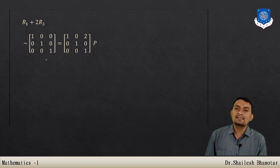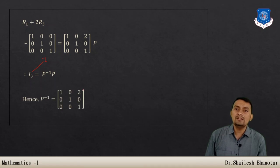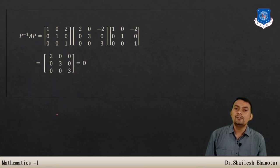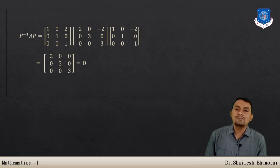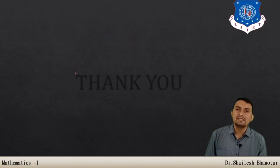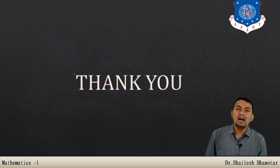After row operations, P inverse is found to be [[1,0,2],[0,1,0],[0,0,1]]. Computing P inverse AP and simplifying gives a diagonal matrix with entries 2, 3, 3 — exactly the eigenvalues of matrix A. This confirms matrix A is diagonalizable. In this video we discussed how to determine whether a matrix is diagonalizable and how to find the diagonalizing matrix P.